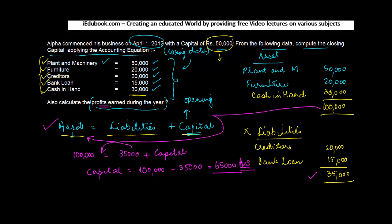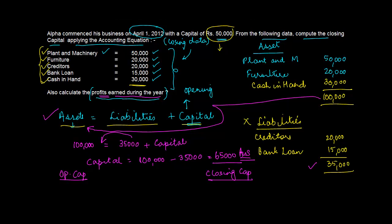Now comes the second part. Also calculate profits earned during the year. Now tell me something. If you have an opening capital and you have a closing capital, we have both these numbers. The opening capital was 50,000. Closing is 65,000. So what is the increase between these two?